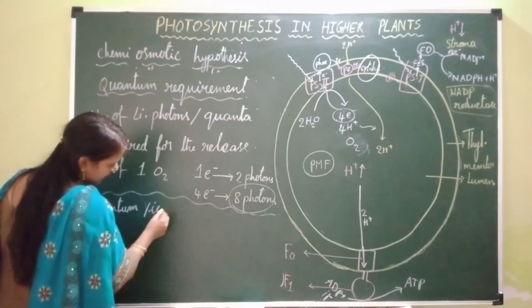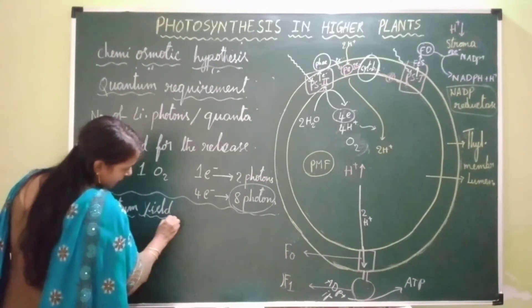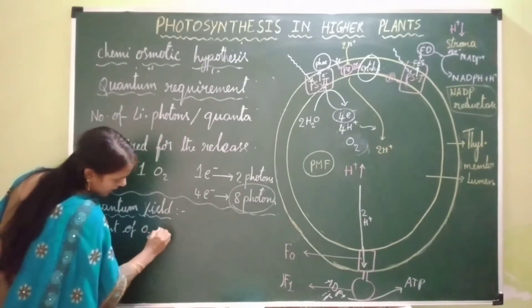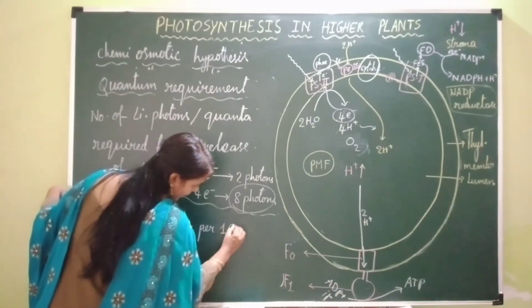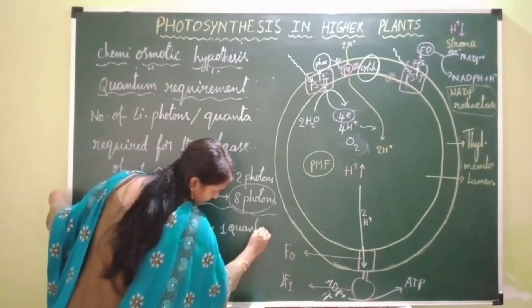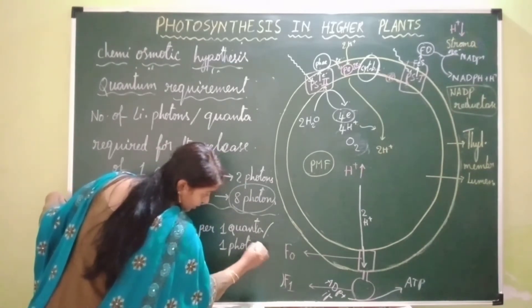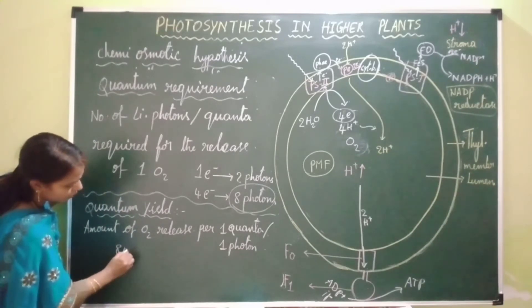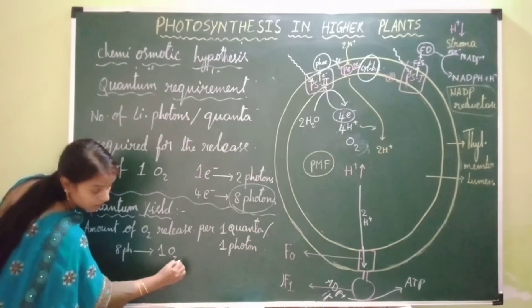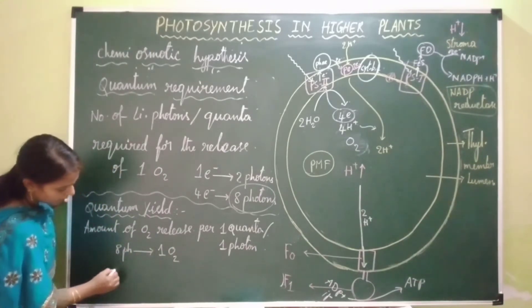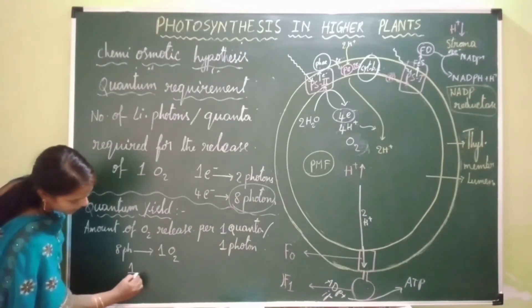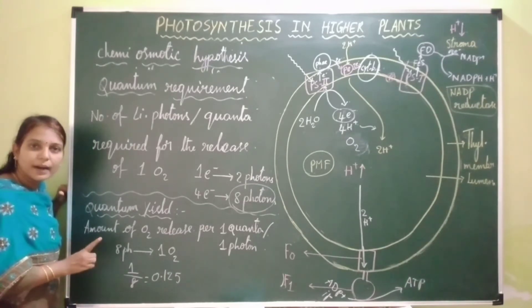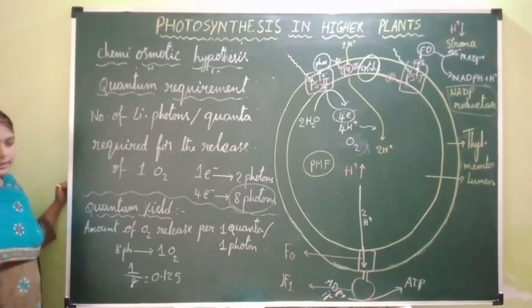Now let's see quantum yield. Quantum yield is nothing but it is the amount of oxygen released per one quanta or per one light photon absorbed. Since eight photons are absorbed for the release of one molecule of oxygen, per one photon, the oxygen released is 1/8, which comes out to be 0.125. So 0.125 molecules of oxygen is released per one quanta of light absorbed — that is called quantum yield.